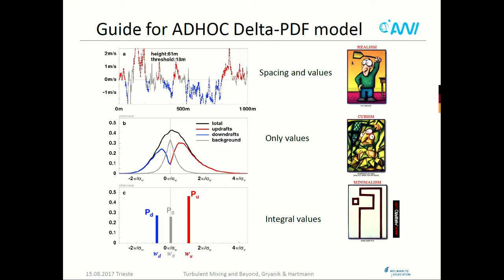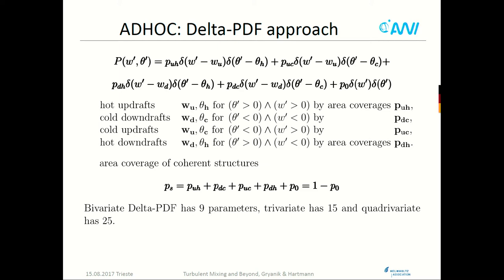We observe that the actual PDF can be approximated by updraft motions (positive velocity), downdraft motions (negative velocity), and a small-scale background near zero. The most promising approach for analytical studies is minimalism: replacing each component by delta functions for updraft, downdraft, and small-scale turbulence. In the analytical representation, the PDF is bivariate with four terms for coherent structure and one for background small-scale turbulence. W-up is the updraft — they can be hot or cold — so you split into nine parameters for the bivariate case.